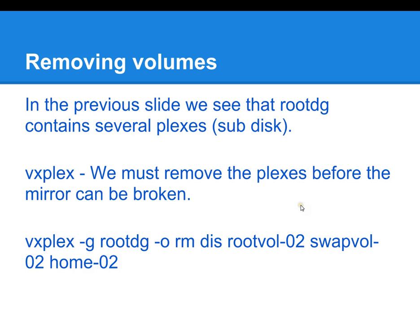The next step is to remove the plexes from one of the discs, because we have the intention of moving that disc out of the disc group so that we can break the mirror. In order to do this, we use the VxPlex command to remove the plexes. The syntax is: VxPlex minus g for group, rm to remove, and then we list the names of the volumes we're going to remove. Because we're removing RootDG02, we're going to remove all the volumes associated with RootDG02.